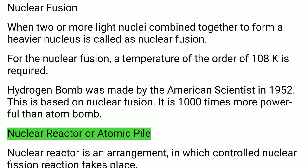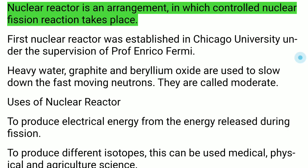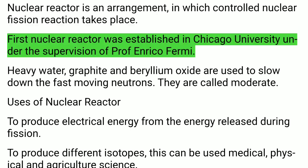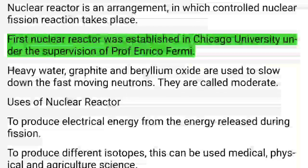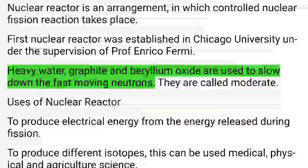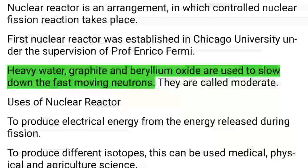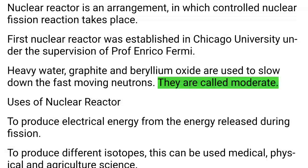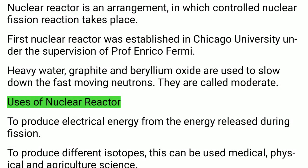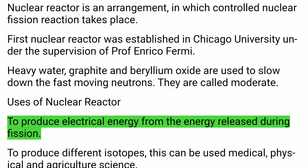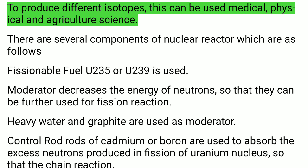Nuclear Reactor or Atomic Pile: A nuclear reactor is an arrangement in which a controlled nuclear fission reaction takes place. The first nuclear reactor was established at Chicago University under Professor Enrico Fermi. Heavy water, graphite, and beryllium oxide are used to slow down fast-moving neutrons — they are called moderators. Uses include producing electrical energy from fission and producing isotopes for medical, physical, and agricultural science.